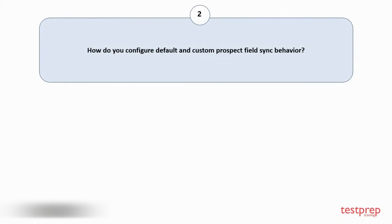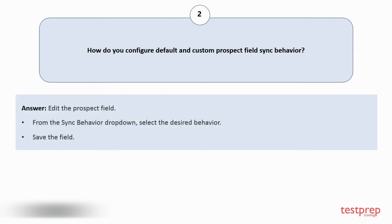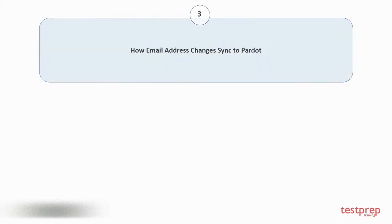Question number two: How do you configure default and custom prospect field sync behavior? Edit the prospect field, then from the sync behavior drop-down select the desired behavior, then save the field.